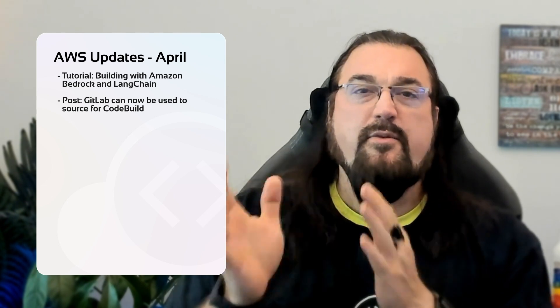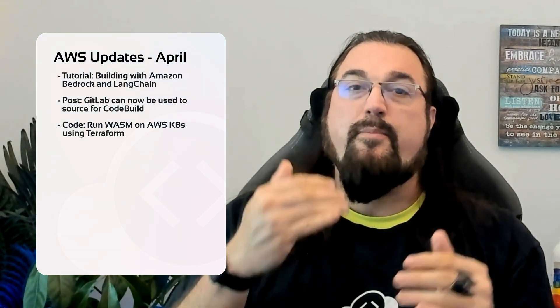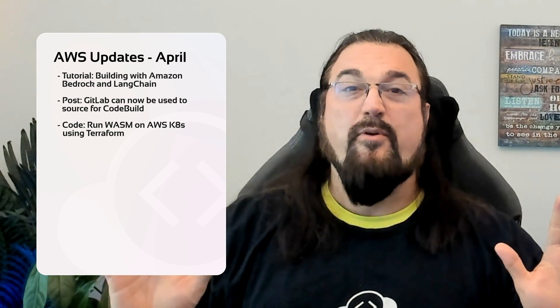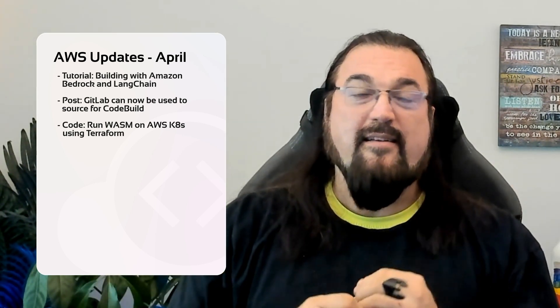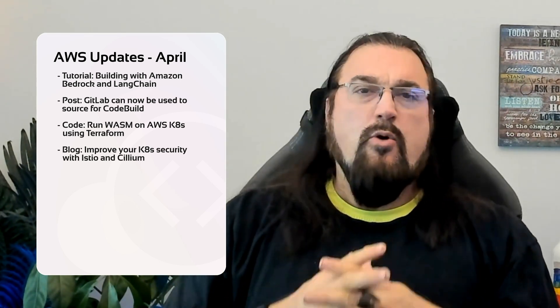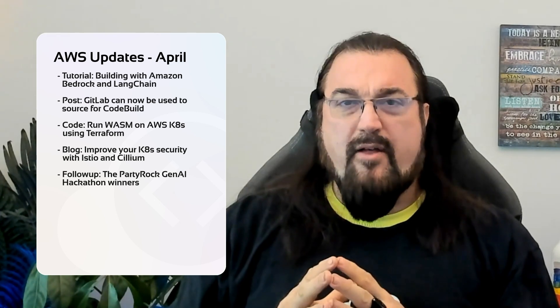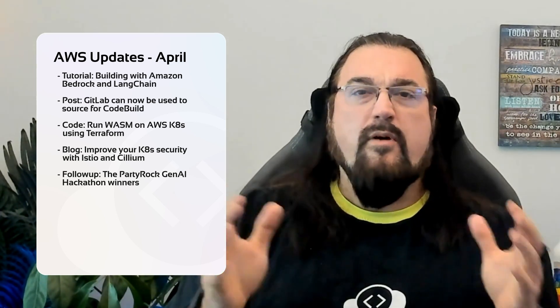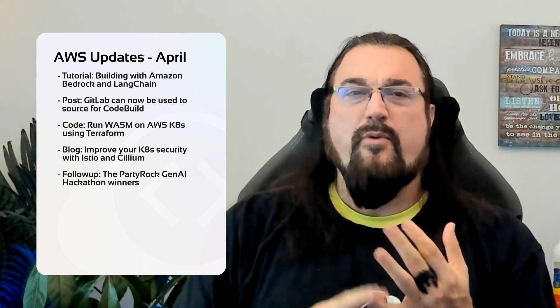We're going to start with a tutorial about using Amazon Bedrock with Langchain to create applications. We're also going to talk about GitLab and its new integration with CodeBuild, which will enable you to use this as a step through your build steps. There's a source repository that will allow you to play with WebAssembly on AWS EKS using Terraform for provisioning, simplifying deploying WebAssembly workloads. We're also going to talk about how to improve your EKS Kubernetes security with Istio and Cilium, enhancing the network and security features of EKS. We're also doing a little follow-up about the Party Rock Gen AI Hackathon — announcing three of the top winners: Parable Rhythm, Faith, and ARG Zombie, highlighting the use of generative AI.